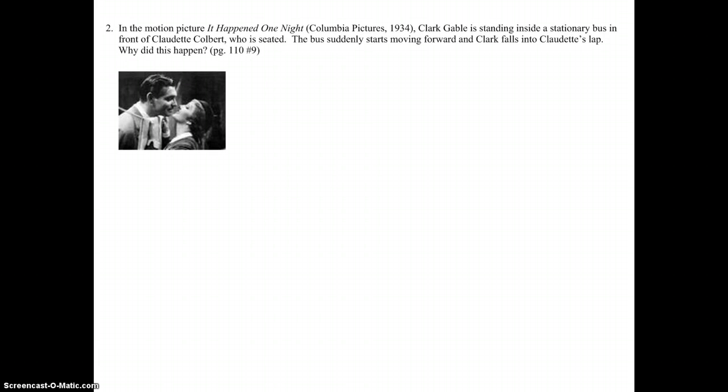In the motion picture It Happened One Night by Columbia Pictures, 1934, Clark Gable is standing inside a stationary bus in front of Claudette Colbert, who is seated. The bus suddenly starts moving forward, and Clark falls into Claudette's lap. Why did this happen? Well, is Clark looking for a little action by Claudette, or what's going on here? Again, this answer revolves around the concept of inertia.